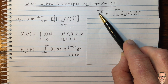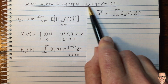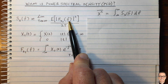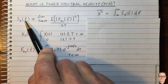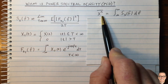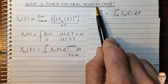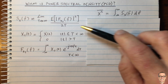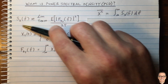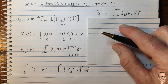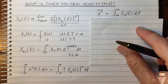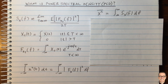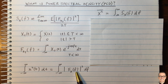So why is it called a density? Why is it called a power spectral density? We can see the spectral component because it's in terms of frequency, and we can see the power component because it relates to the power. But why is it called a density? For this, we should look at the units. One good way to start is by looking at the relationship between the time domain and the frequency domain in terms of energy.